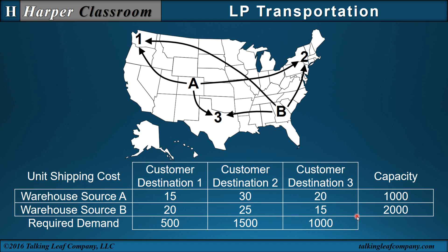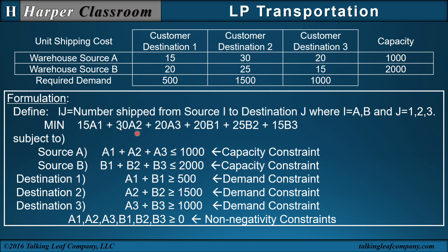Let's formulate it. In the formulation, we first define our decision variables. Let I,J be the number shipped from source I to destination J, where I is A and B, and J is 1, 2, and 3. So A1 represents how many are shipped from source A to destination 1. The cost is 15, so 15 times A1 is the shipping cost. Likewise, 30A2, 20A3, and 20, 25, 15 for B1, B2, B3. I add all those together as my shipping cost.